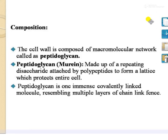If we study the composition of the cell wall, we find it is made up of a peptidoglycan layer. Peptidoglycan is made up of two components: the peptide portion and the glycan portion. It consists of repetitive disaccharides attached by polypeptide chains to form a lattice which protects the entire cell. Peptidoglycan is one immense covalently linked molecule resembling multiple layers of chain-like fences, forming a lattice structure made up of peptide and glycan portions.